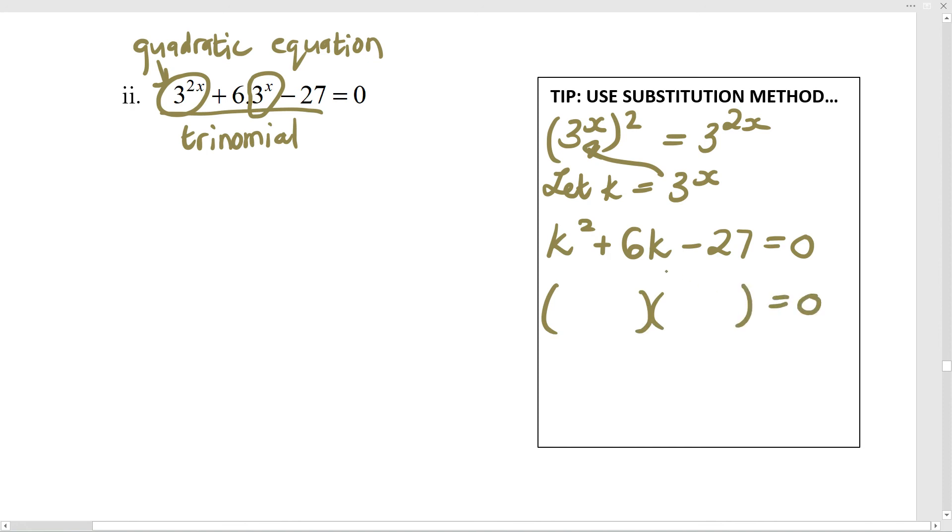So this is a nice easy one where you need factors of 27 that subtract to give me 6. So it'll be 9 and 3. They are different. The biggest one is positive. This was straightforward at this point.